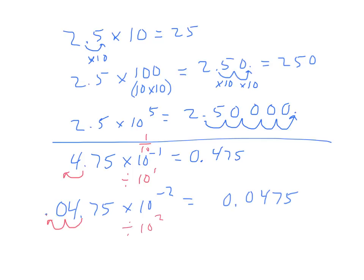So when we think about scientific notation, we can summarize one thing here, which is that when we're going to the left, it's negative; going to the right, it's positive — kind of like the number line. So what I mean by that is: when we were multiplying times a positive exponent, we were going to the right. When we were multiplying by a negative exponent, we were going to the left.